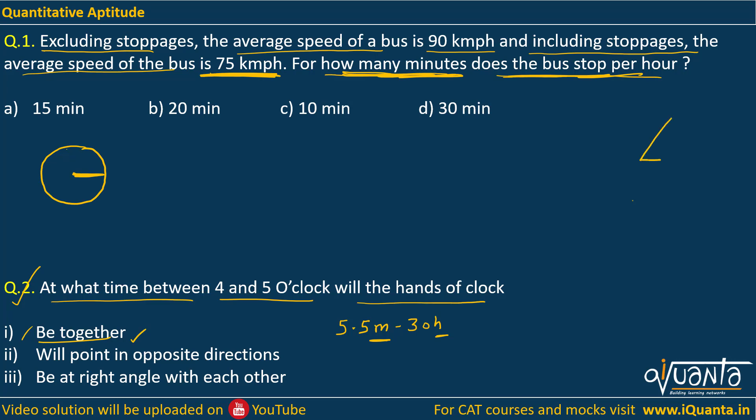how to read an angle? If there are two lines like this, we always read the angle in anti-clockwise direction. So if hands of the clock are together, there is no angle between them, it is zero.